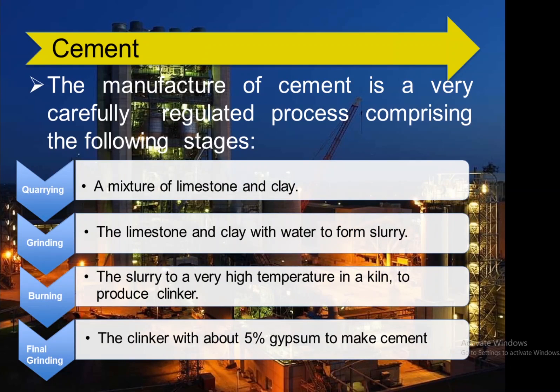The manufacture of cement is a carefully regulated process comprising the following stages: mixing limestone and clay with water to form slurry is known as quarrying; grinding the slurry is called grinding; heating to a very high temperature in a kiln to produce clinker is known as burning; and mixing the clinker with about 5 percent gypsum to make cement is known as cooling or final grinding.